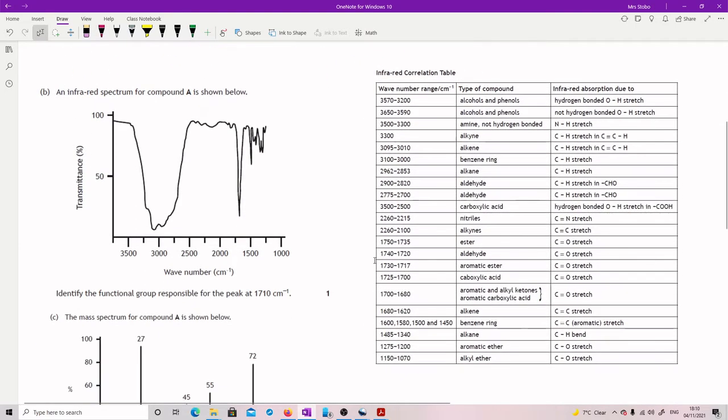Next question. It says an infrared spectrum for compound A is shown below and we have a little picture of it and then it says identify the functional group responsible for the peak at 1710.